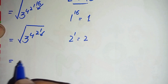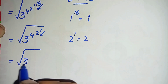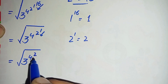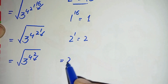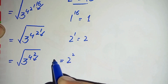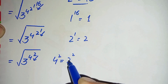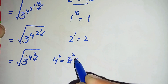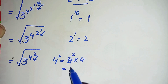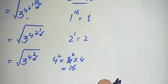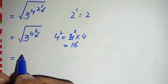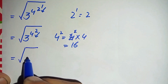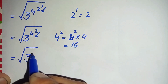So this becomes the square root of 3 raised to power 4, raised to power 2. Now we will find the value of 4 raised to power 2. 4 raised to power 2 means multiplying 4 two times: 4 times 4 is 16. So we replace 4 raised to power 2 with 16, giving us the square root of 3 raised to power 16.